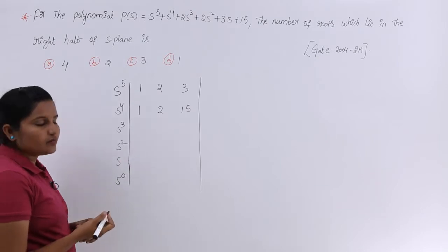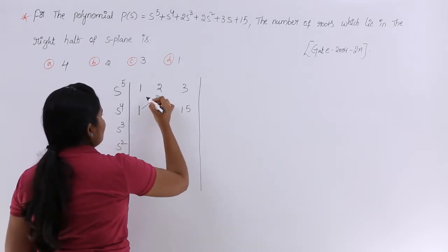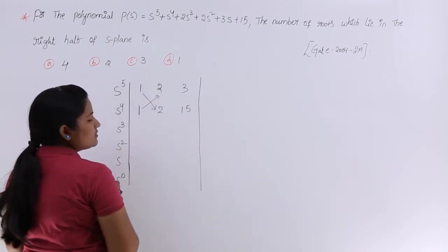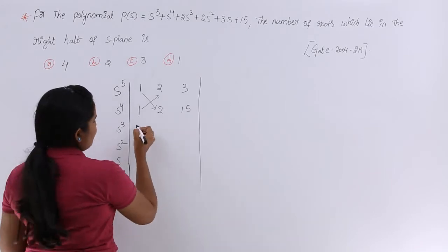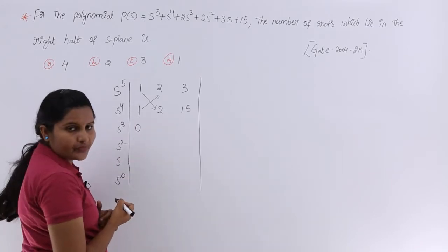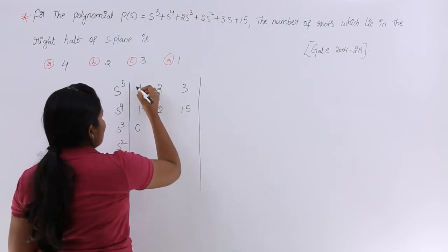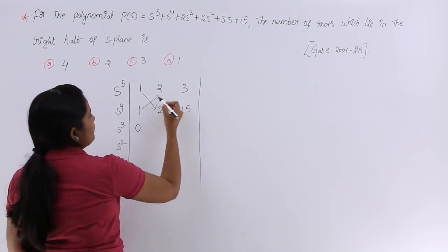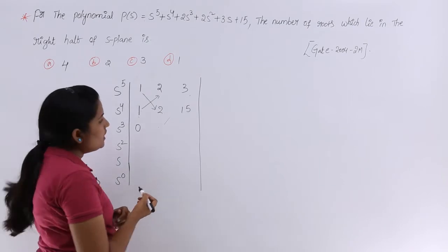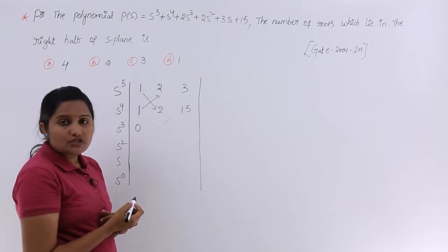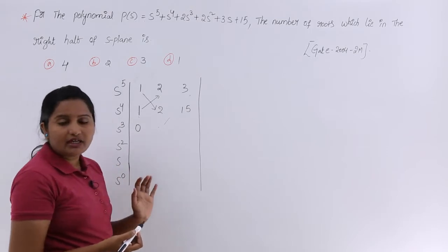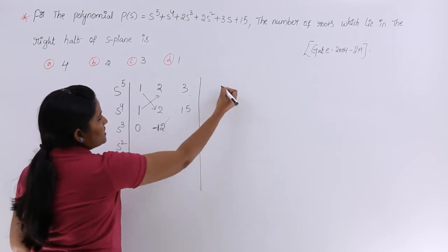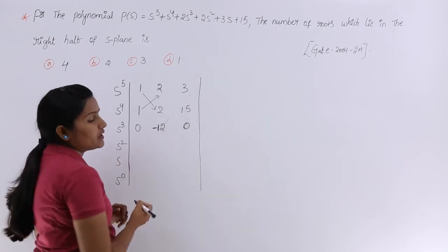To get the S³ row first element: (1×2 − 1×2) / 1 = 0. For the second element, cross-multiplying the first two column elements: (1×3 − 1×15) / 1 = 3 − 15 = −12. For the third element there is no cross set, so just consider 0.